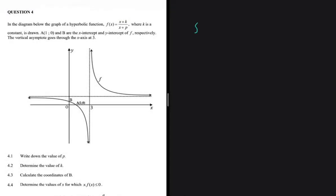We have a function f of x equals x plus k divided by x plus p. We have points A and B as our intercepts, and we're also given a vertical asymptote that goes through the axis at x equals 3. The first question, 4.1, is asking us to write down the value of p.